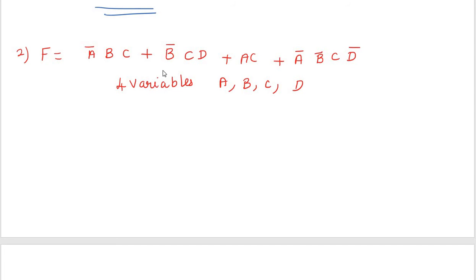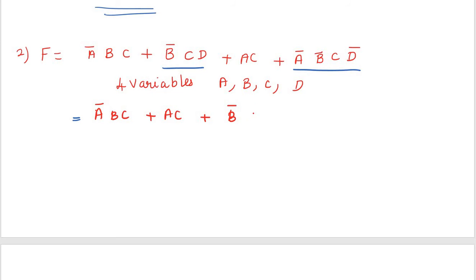Now I am going to minimize this. First, I take terms B'CD and A'B'CD'. Which one is common? B'C is common. So B'C(D + A'D'). The law I am going to use is the distributive law: A + BC = (A + B)(A + C).